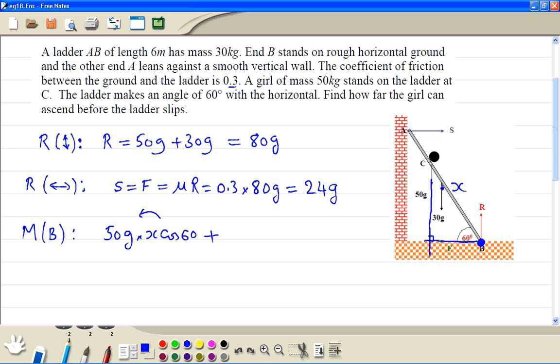Then we want the adjacent length, which is X times cosine 60. Plus the weight, which is 30g. Then the distance up to there is 3. Then this length here is 3 times cosine 60.